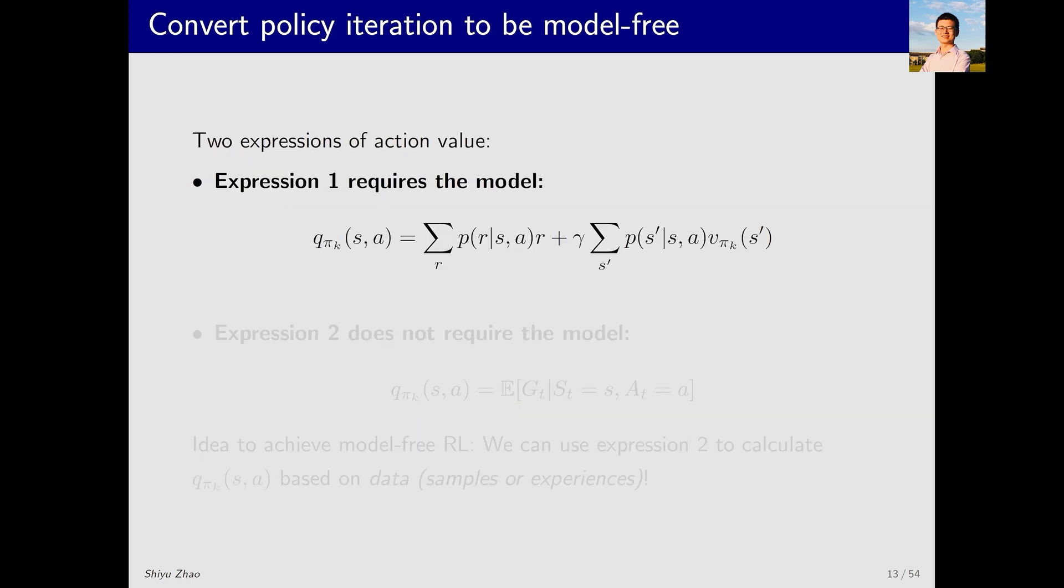When it comes to computing q pi k, there are two ways. The first way relies on the model. In this case, we first obtain v pi k and then, since we know these models, we can compute q pi k. Apart from that, there is another way, which doesn't rely on the model. This way depends on the most primitive definition of action value.